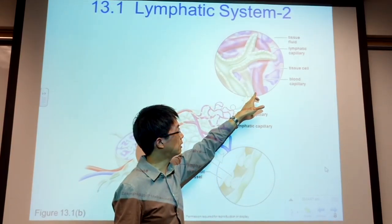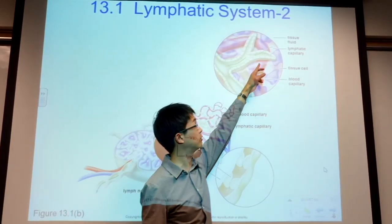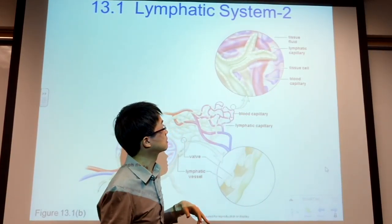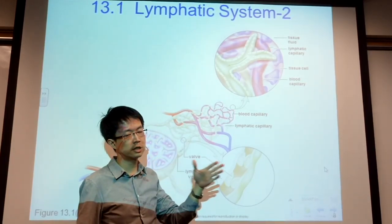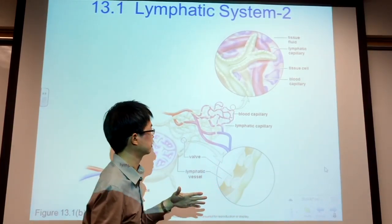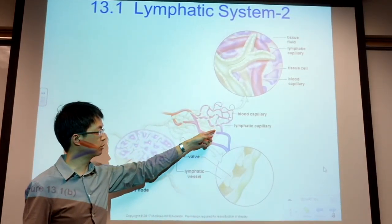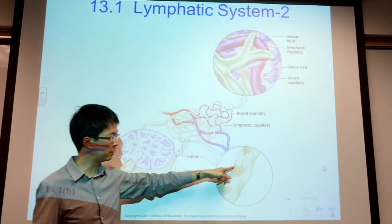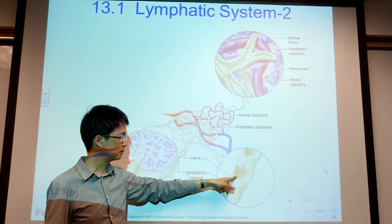Blood capillaries don't have this kind of open end — a blood capillary is a continuation of all the blood vessels. Lymphatic capillaries will converge, and they also have one-way valves, so the valve will only open in one direction.